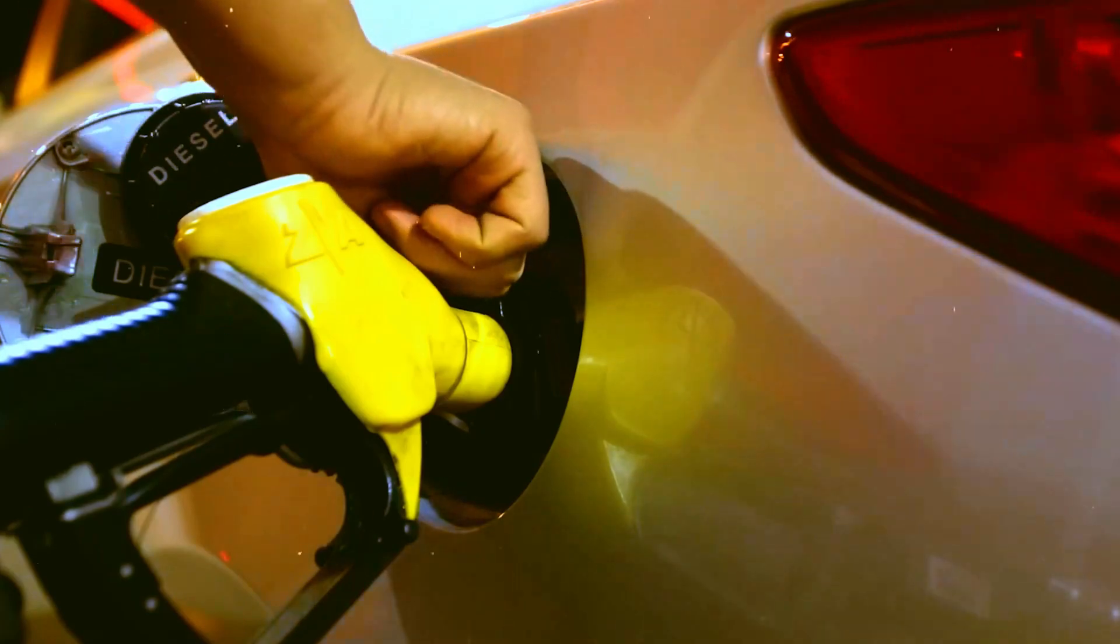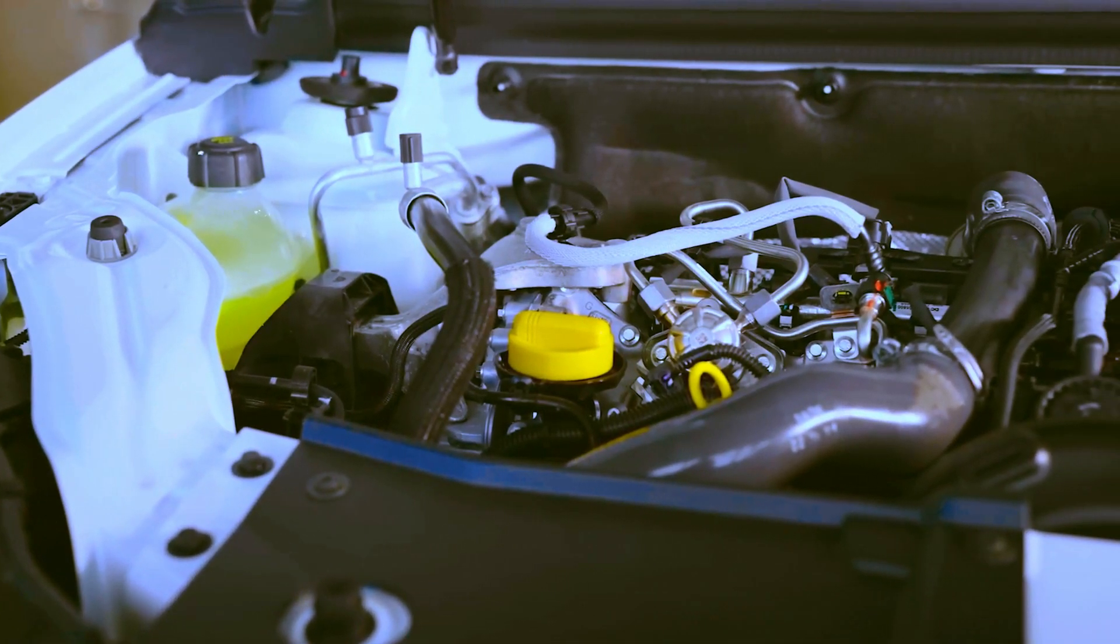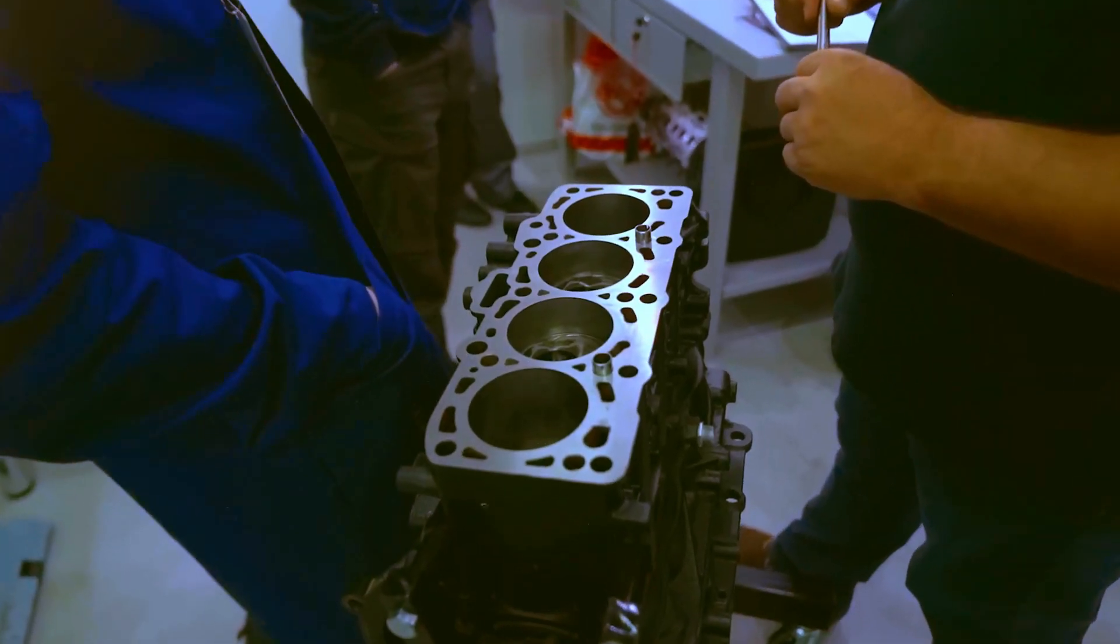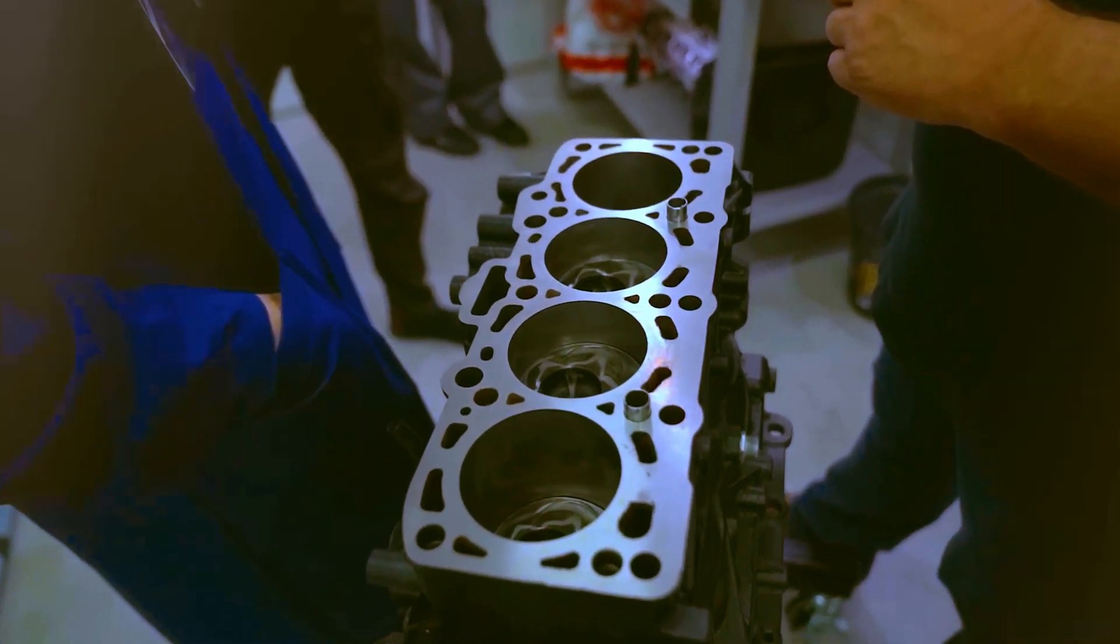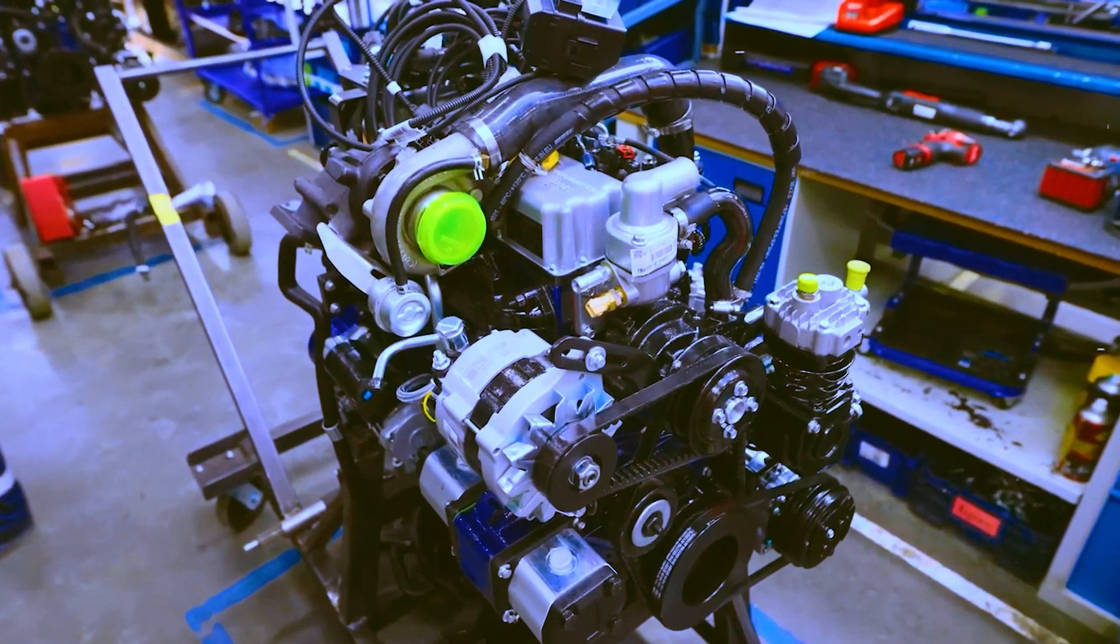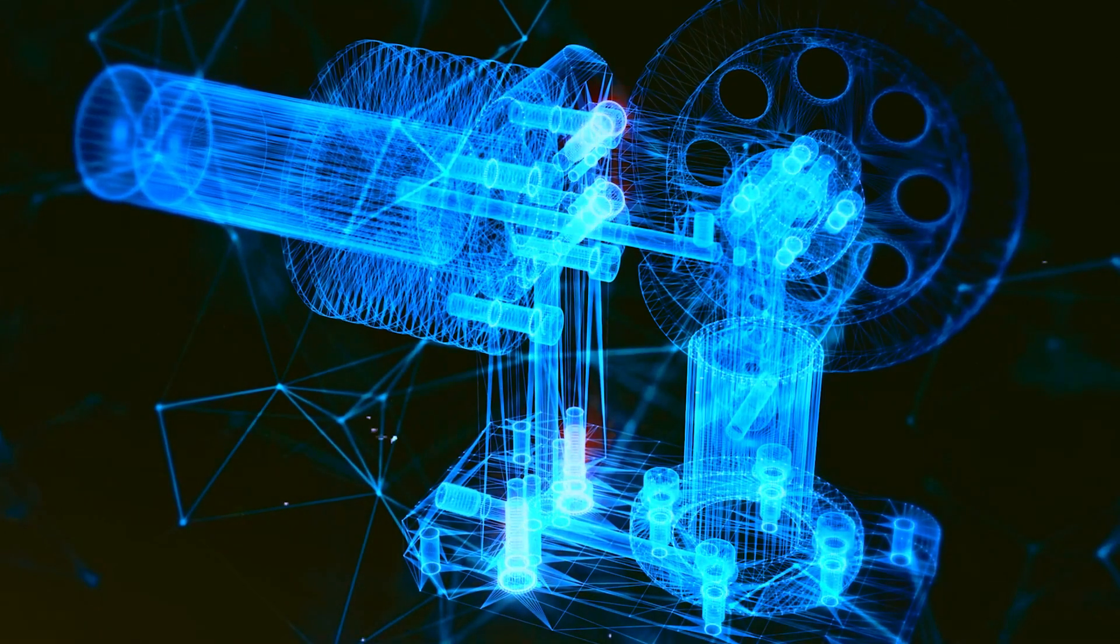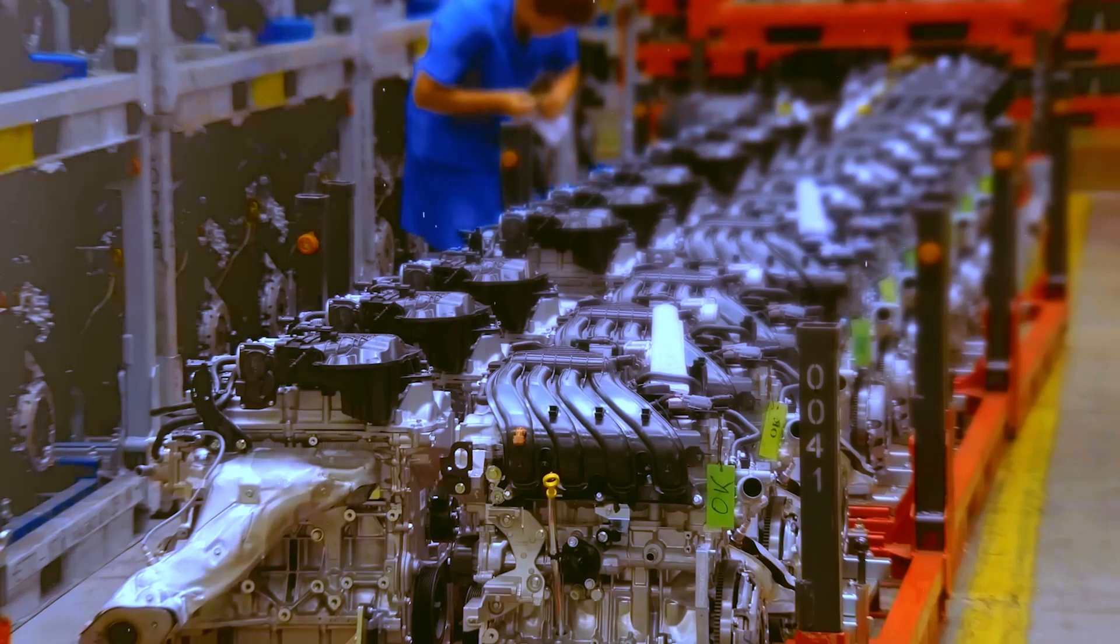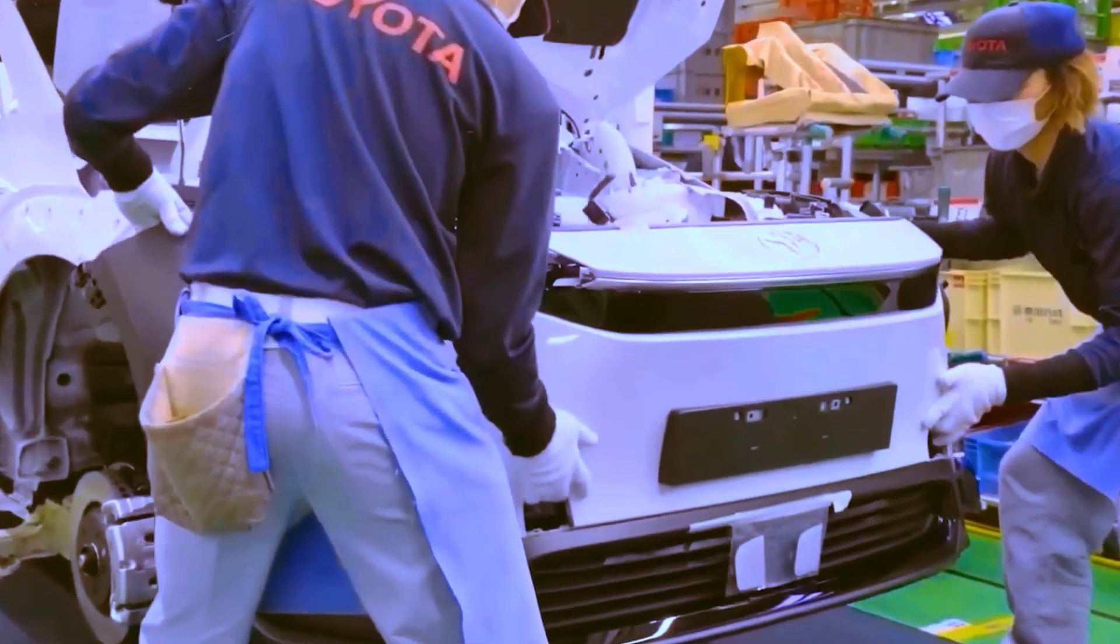This hybrid approach can be quite practical, given the characteristics of ammonia, such as its comparatively low flame propagation speed, which may pose challenges for engines operating at high speeds or low loads. By combining ammonia with another fuel, GAC's engine may have effectively addressed these limitations, ensuring smoother and more versatile performance under various driving conditions.